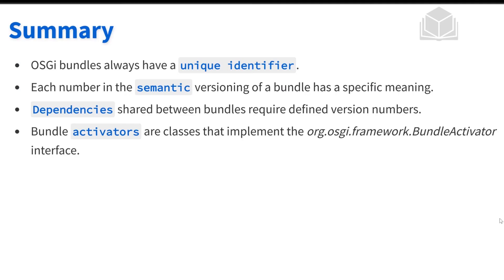Let's summarize the big ideas from this video and the previous one. OSGI bundles always have a unique identifier defined in a bundle's manifest file with two specific headers: the symbolic name and the bundle version. Each number in semantic versioning has a specific meaning — major, minor, micro, and qualifier. Dependencies shared between bundles require defined version numbers, using parentheses versus square brackets. Bundle activators are classes that implement the bundle activator interface — in the Liferay world, we don't deal with these too much, but looking at the basics of OSGI, it's helpful to see how the bundle activator works.